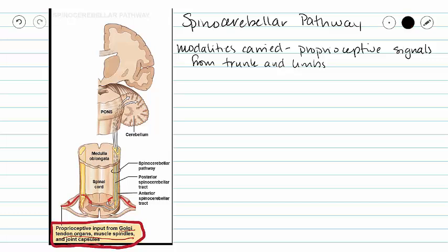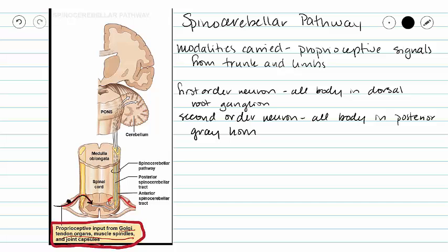Our first order neuron comes in through our dorsal root into our posterior gray horn, with its cell body in our dorsal root ganglion. Our second order neuron cell body is going to be located in our posterior gray horn.